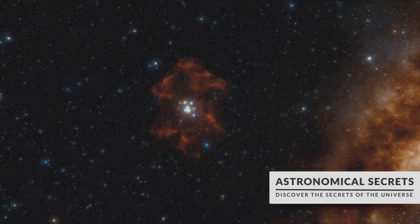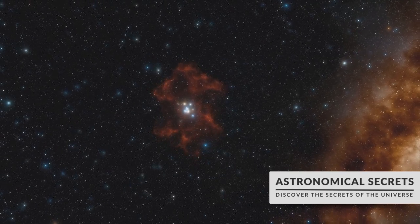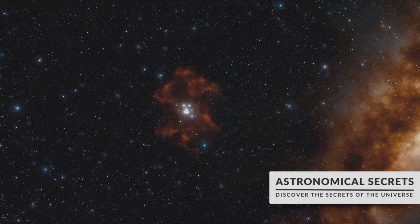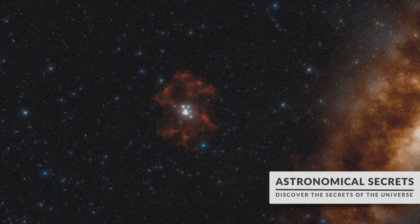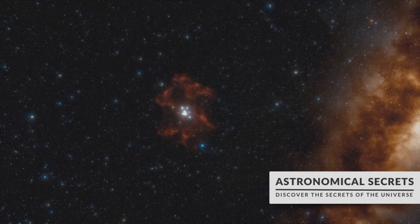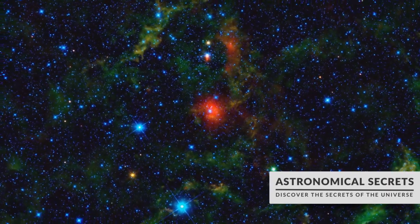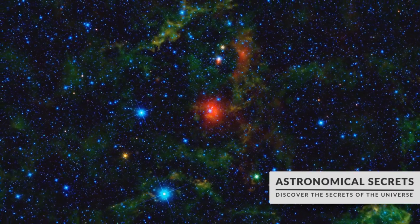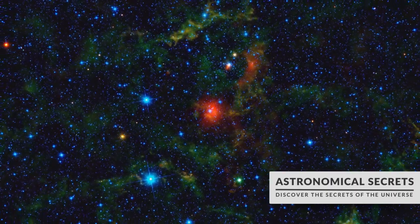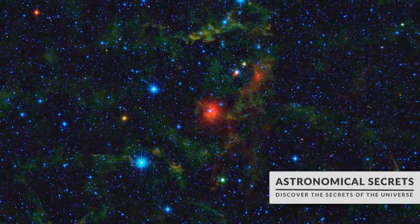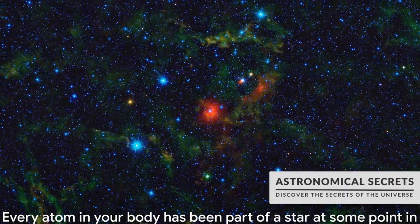These white dwarfs are crucial in the cycle of star formation. When a star like our sun reaches the end of its life, it swells into a red giant, then sheds its outer layers to form a planetary nebula. The white dwarf left behind is the dense, hot core of the former star, and this core continues to radiate heat and light for billions of years.